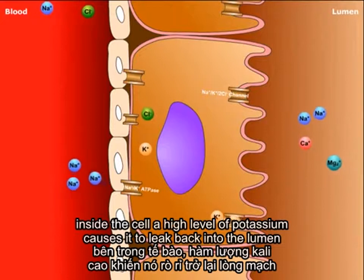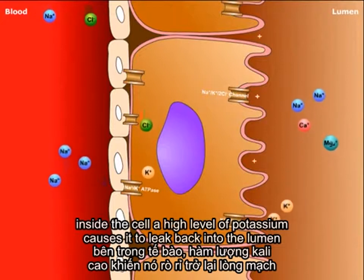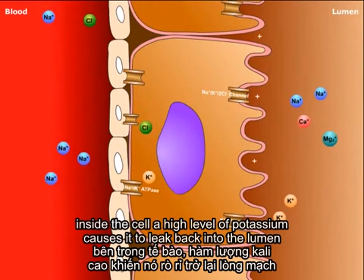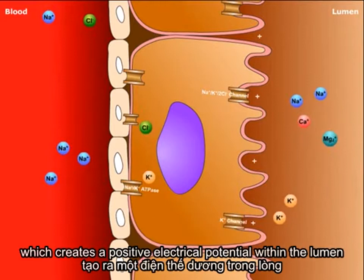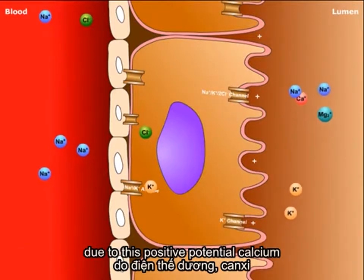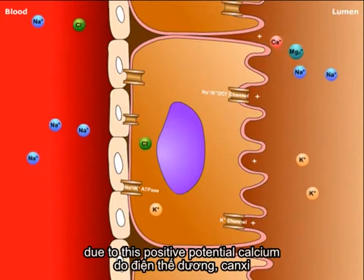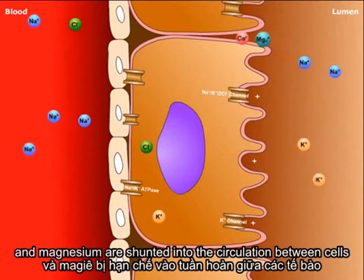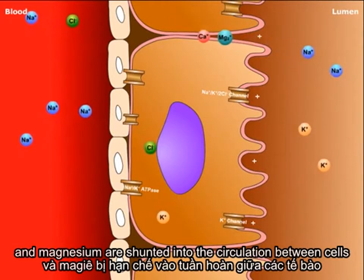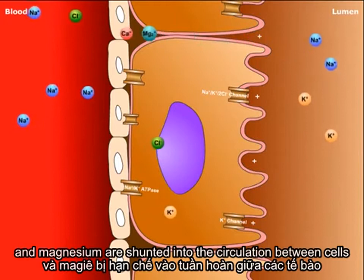Inside the cell, a high level of potassium causes it to leak back into the lumen, which creates a positive electrical potential within the lumen. Due to this positive potential, calcium and magnesium are shunted into the circulation between cells.